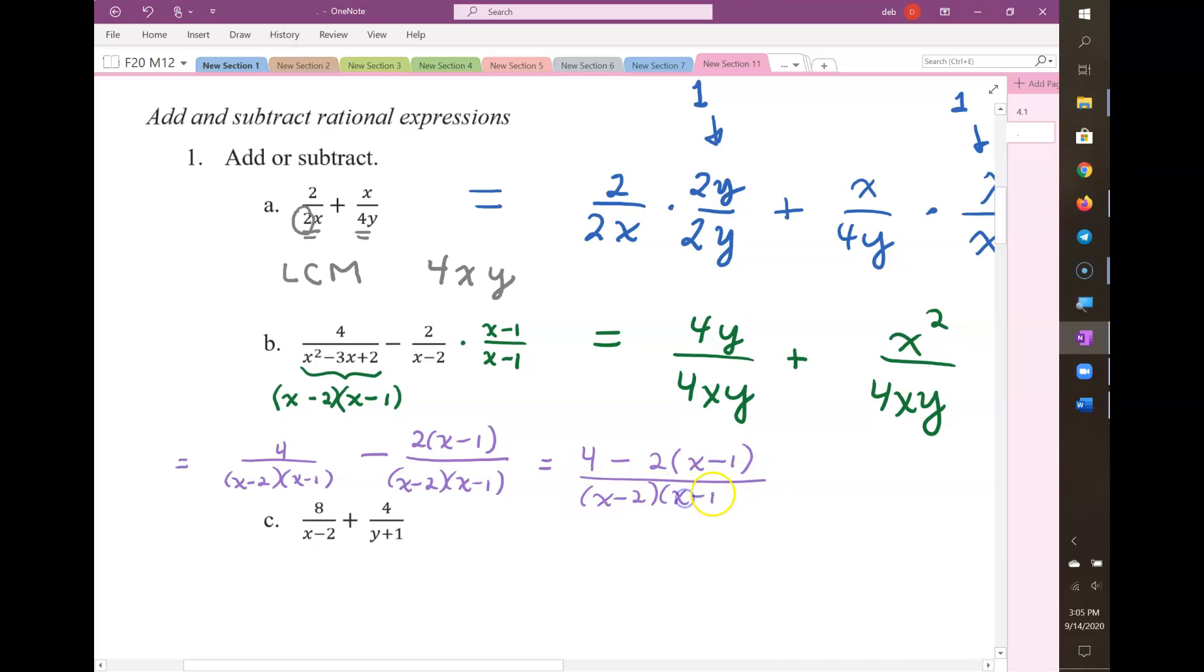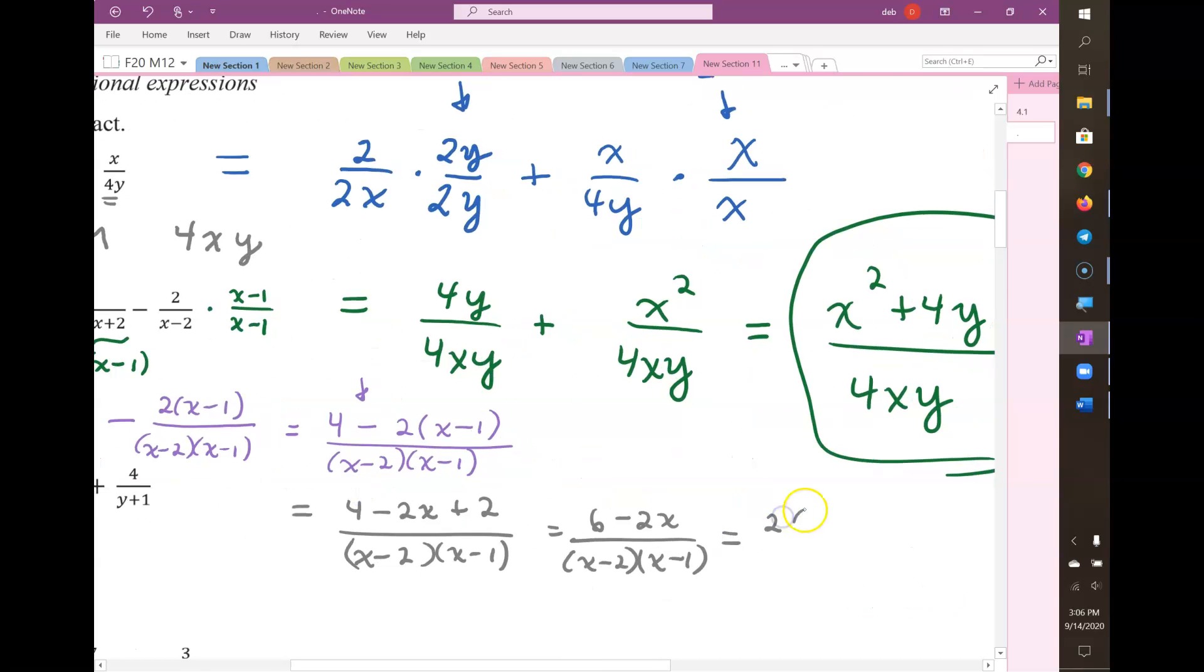Now that you have a common denominator, you can combine the numerators over that one common denominator. Don't cancel the x minus 1 because of this minus. You need to simplify the numerator and then see if there's any canceling that can happen. You're going to have 4 minus 2x plus 2 over (x minus 2)(x minus 1). That's 6 minus 2x over (x minus 2)(x minus 1). If you wanted to make it look more beautiful, you could factor out a 2 from the numerator, just to make sure there isn't a matching factor in the top and the bottom. Newton should accept either of these two answers.